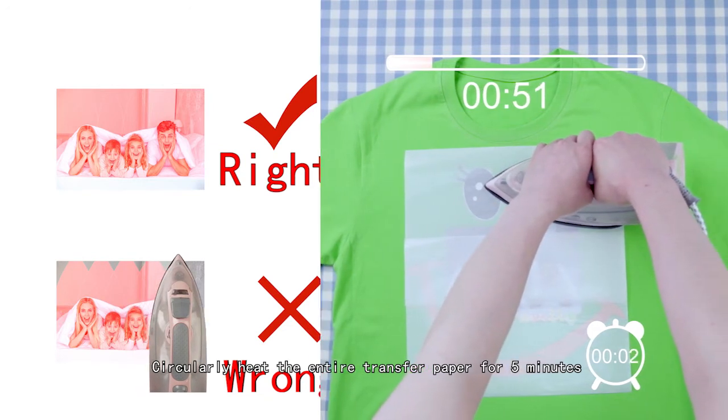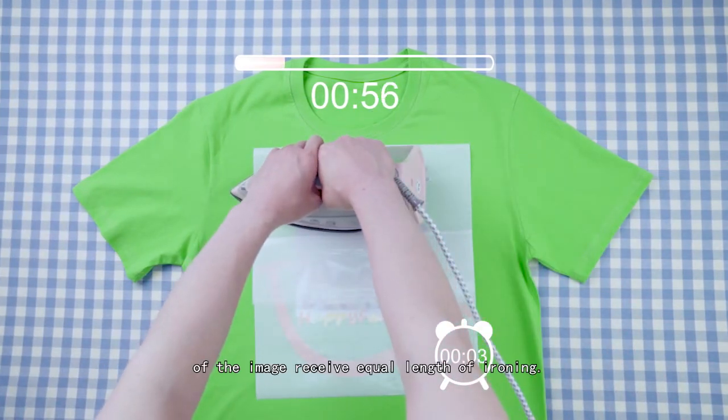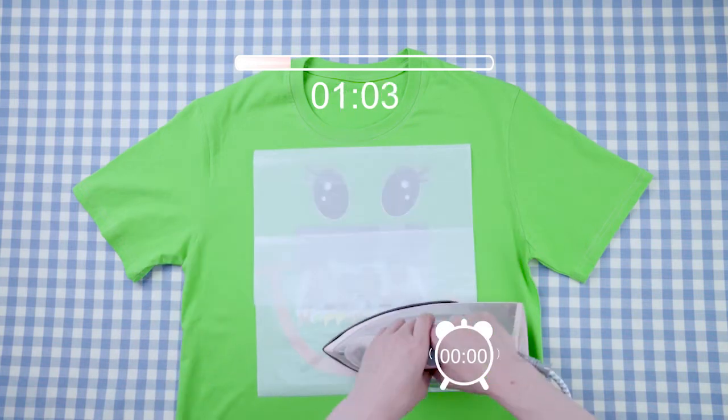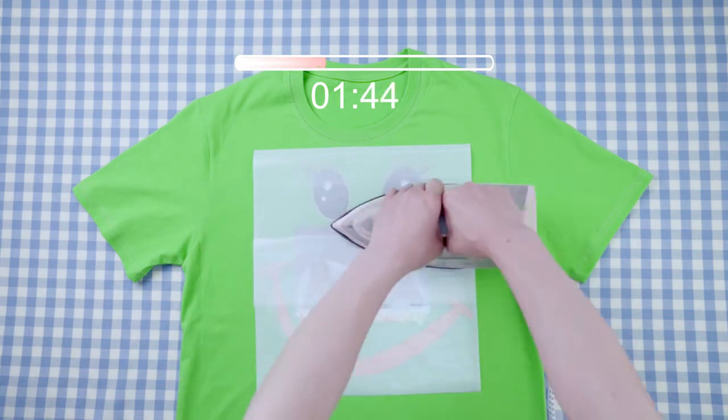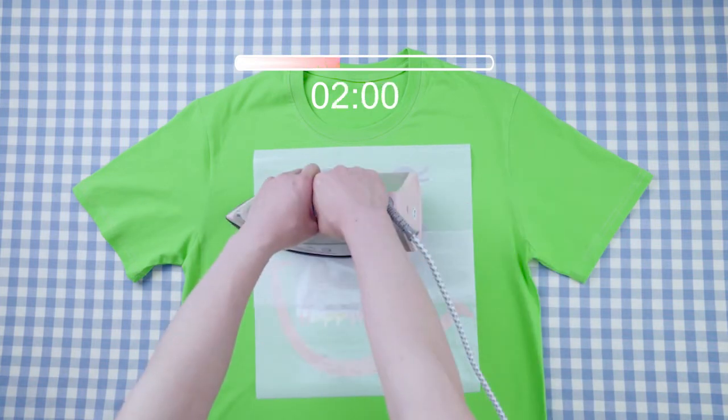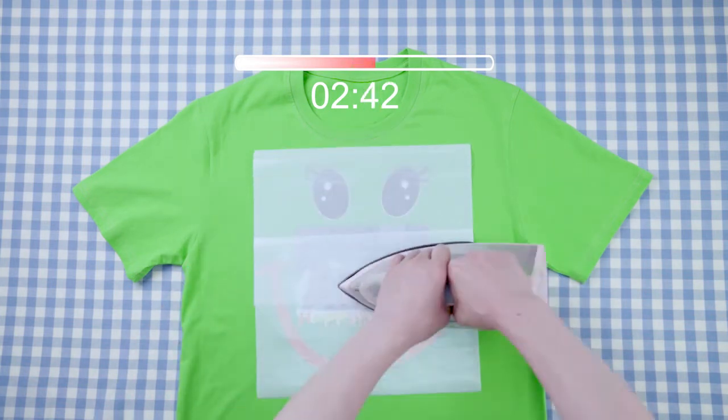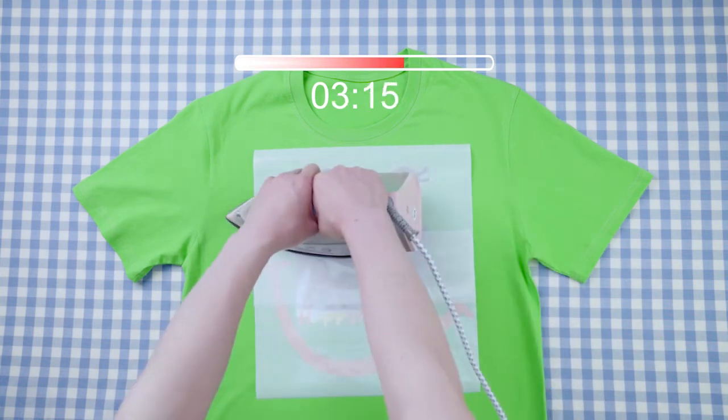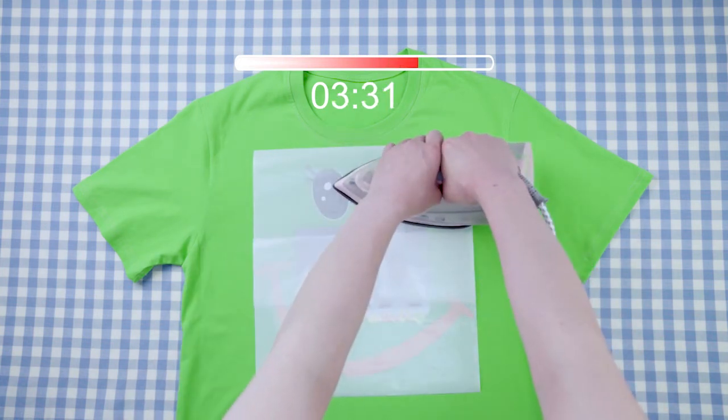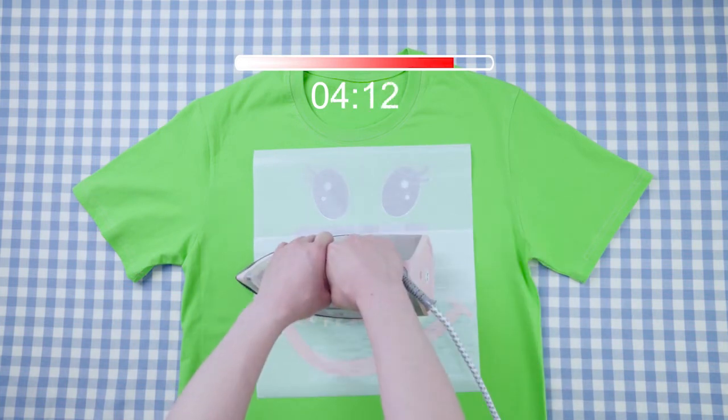Circularly heat the entire transfer paper for 5 minutes. It is crucial that all areas of the image receive equal lengths of ironing.